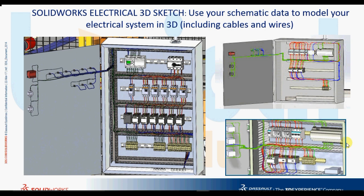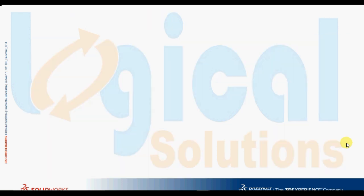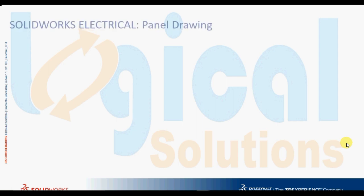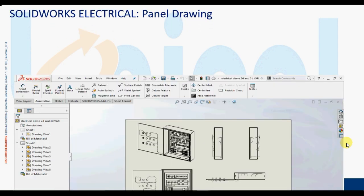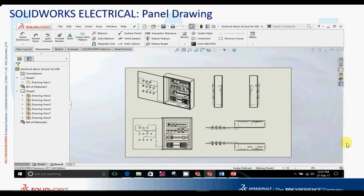SOLIDWORKS ELECTRICAL 3D requires SOLIDWORKS CAD software. Designers can place 3D versions of all electrical parts into their model and run wires in 3D to connect all electrical equipment.